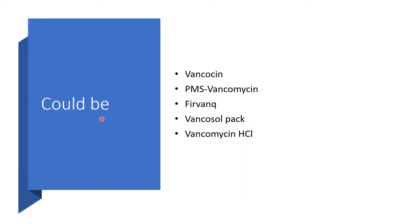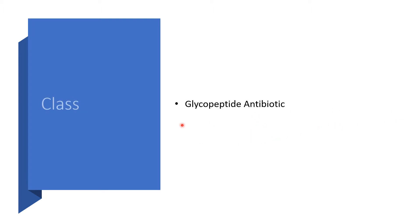Vancomycin could be under different brand names: Vancocin, PMS Vancomycin, Vivang, Vancozyv Pack, or Vancomycin Hydrochloride. By classification, it is a glycopeptide antibiotic.